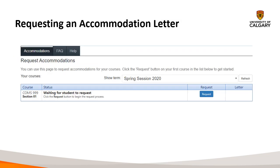Once you've selected the Accommodations tab, you'll be taken to a page where you'll request your accommodation letters to be issued. The first step is to make sure you've selected the correct semester using the drop-down menu on the right-hand side. You should see a list of all the courses you're currently registered in. When you first log in, all will share a similar status: waiting for a student to request. It's important to note that if you change lecture sections or add new courses, you'll need to go back and request accommodations in those courses, as this is the starting point for booking exams and helps the exam centre book your final exams.